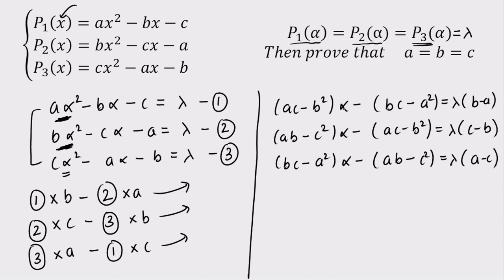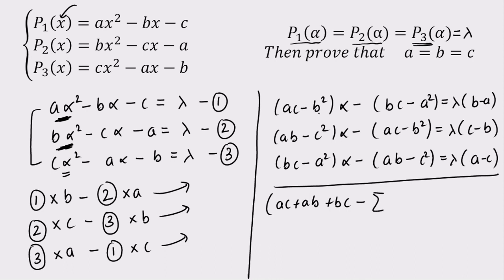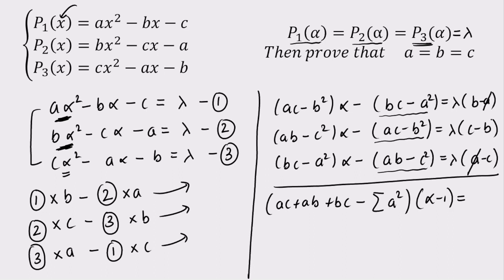Now to find the value of alpha, I'm going to add all three derived equations. Collecting the coefficient of alpha, we get: (AC + AB + BC − (A² + B² + C²))·alpha. On the right-hand side, lambda times (B−A + C−B + A−C), which cancels to zero. So the right-hand side is zero.